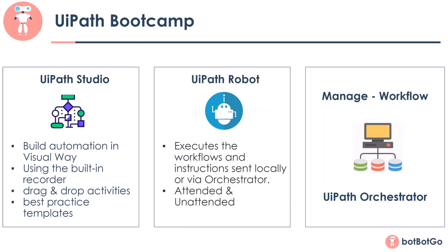The UiPath robot is an application that executes the workflows developed in UiPath Studio. As we had seen, we published the UiPath Studio workflow into a NuGet package file, and this package file is used by the UiPath robot to execute that workflow. They can be triggered locally or from the Orchestrator. There are basically two kinds of robots: the attended and the unattended. The attended robot is triggered by a user event like a mouse click or hotkey, and operates as an assistant to a human. It could be used in automation where human validation is necessary. The unattended robot, on the other hand, runs remotely without any human intervention and could be used to automate back-office activities like downloading data or generating reports.